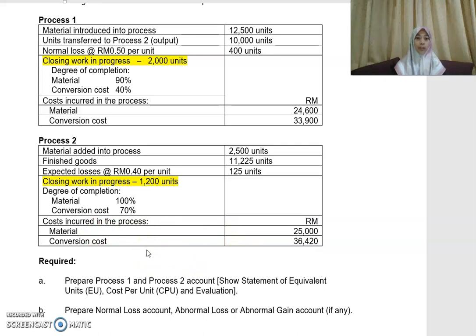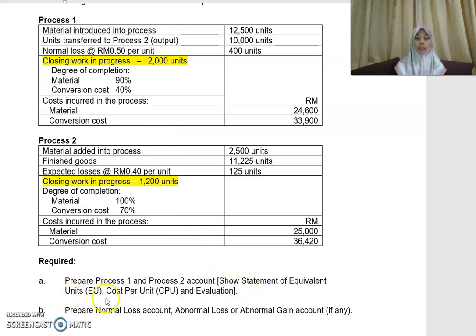You are required to prepare process one and process two accounts. Because you have closing WIP, you cannot simply calculate your cost per unit as total input value divided by total input quantity. You need to do some additional work — specifically, a statement of equivalent units, cost per unit, and evaluation. You also need to prepare the normal loss account, and abnormal loss or abnormal gain account if any.